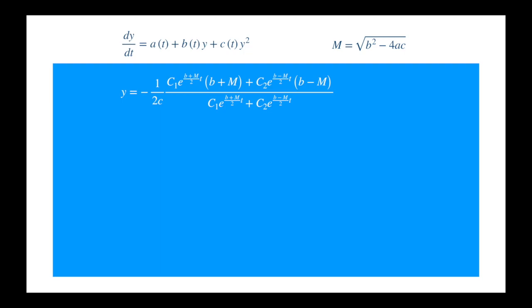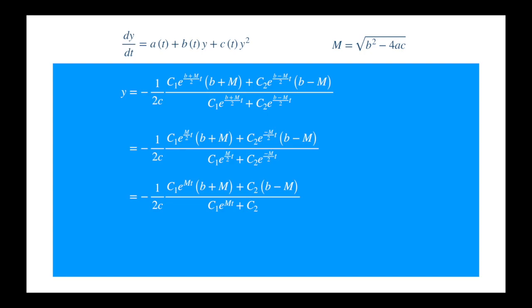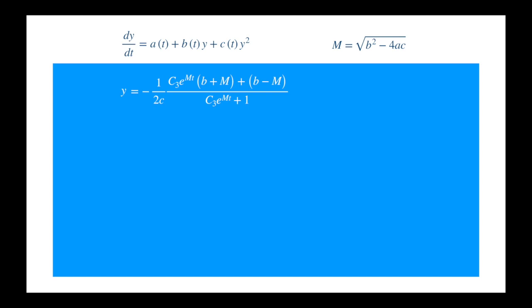Now we have the solution, which we can simplify. The b divided by 2 appears in all terms upstairs and downstairs, so it vanishes. Now the m divided by 2 appears in the exponents with plus and minus signs in different places, so we can't eliminate it completely, but we can simplify it by multiplying everything by exponential of m divided by 2. Now the problem is we have two constants c1 and c2, but the differential equation is first order, so we expect only one constant. But worry not, because we can divide everything by c2, then c1 divided by c2 is a constant we can call c3, and we are out of the trouble zone. This constant is arbitrary, so we have the general solution. If you have an initial condition, say y naught equals 0, then you can fix this constant.